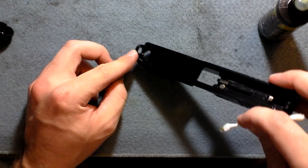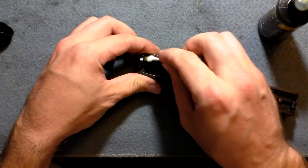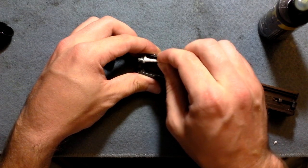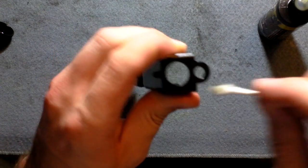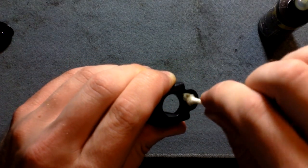You also want to put some here where the recoil spring sits, and also at the end here where the barrel sits. I want everything to be nice and lightly lubricated.